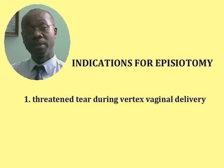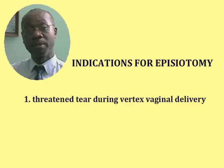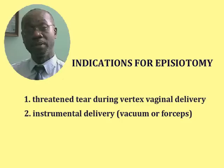First, during the delivery of a baby who's presenting with a vertex, if it's noticed that the perineum is threatening to tear, then an episiotomy would be performed in order to prevent the perineum from sustaining an uncontrolled tear. An episiotomy is also performed during instrumental delivery using either the vacuum extractor or the obstetric forceps. It's also used when one is conducting a vaginal breech delivery.